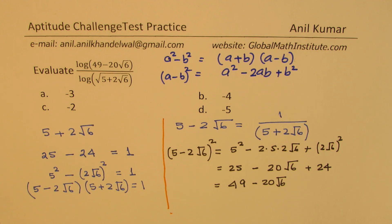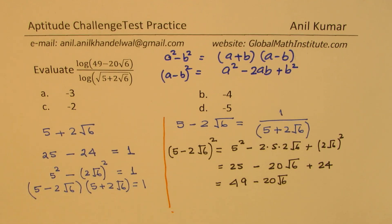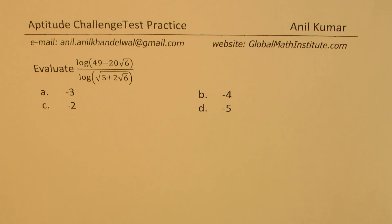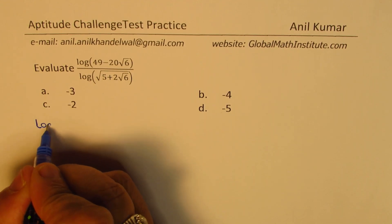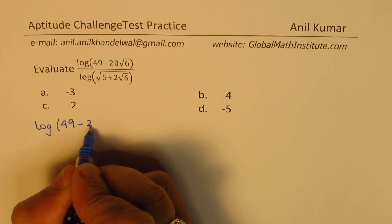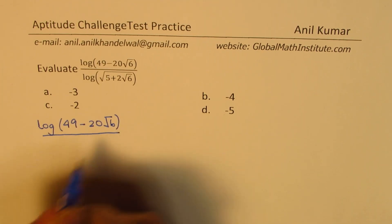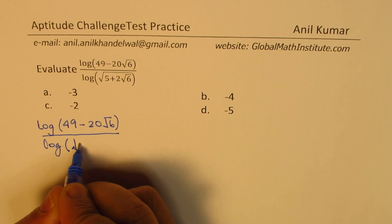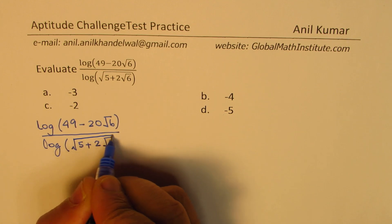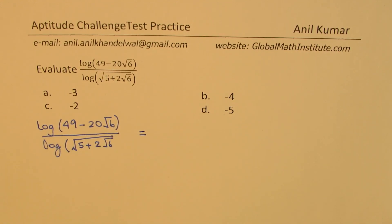These are the things which will help you simplify the given expression and find the answer. For a multiple choice setting, this is a very difficult question — the kind you see when appearing for a very difficult competitive exam, especially entrance exams to excellent universities or institutes. Now let's begin by simplifying: we are working with log of 49 minus 20 square root 6 over log of square root of 5 plus 2 square root 6. We can write down the numerator as we just saw.